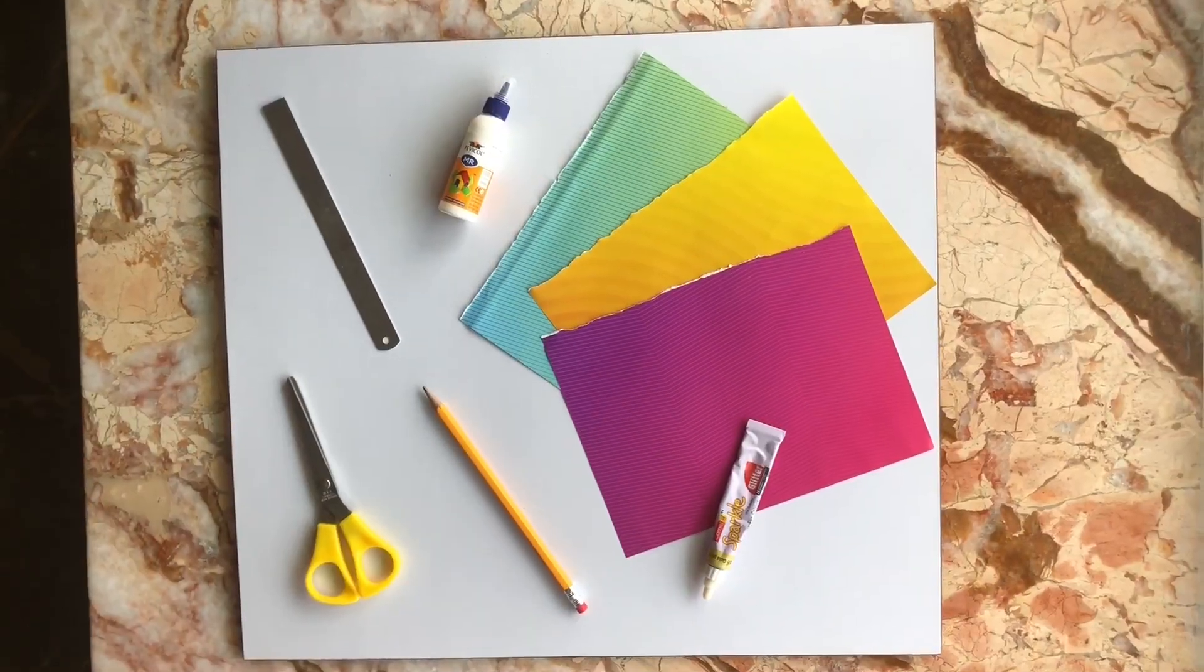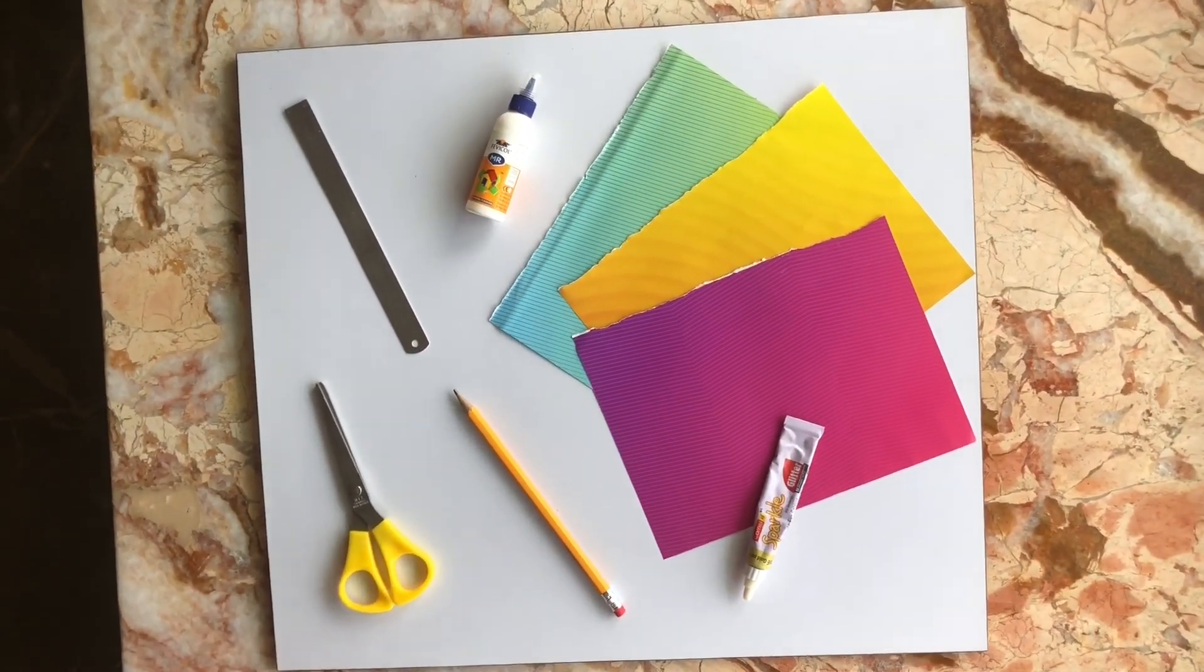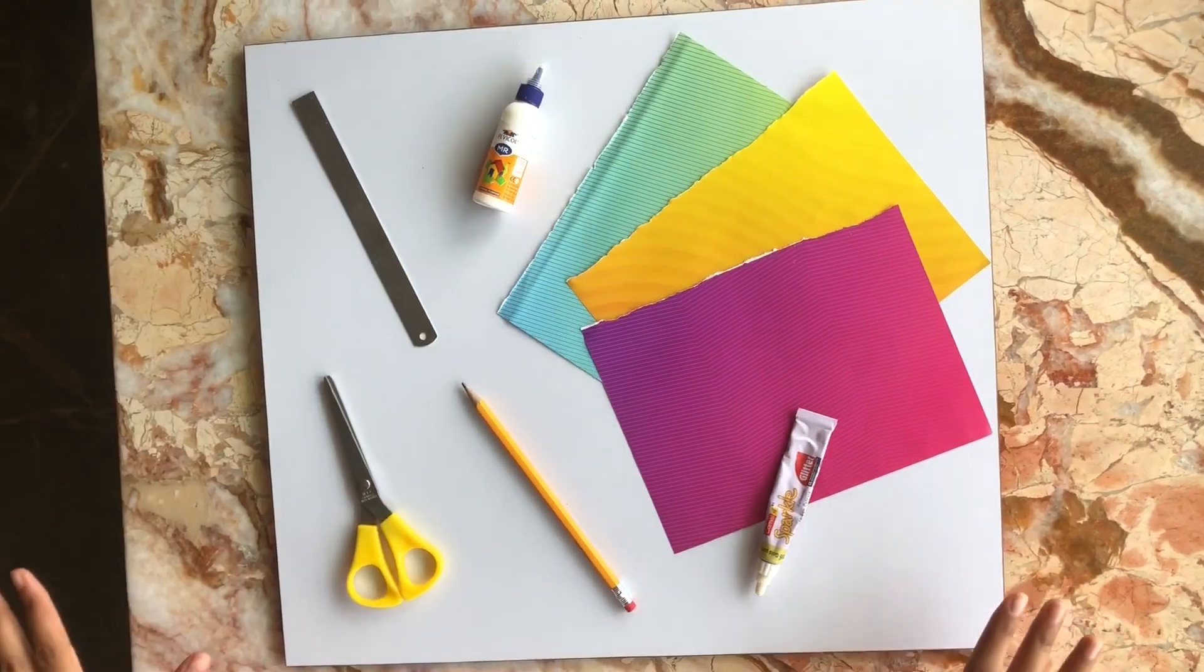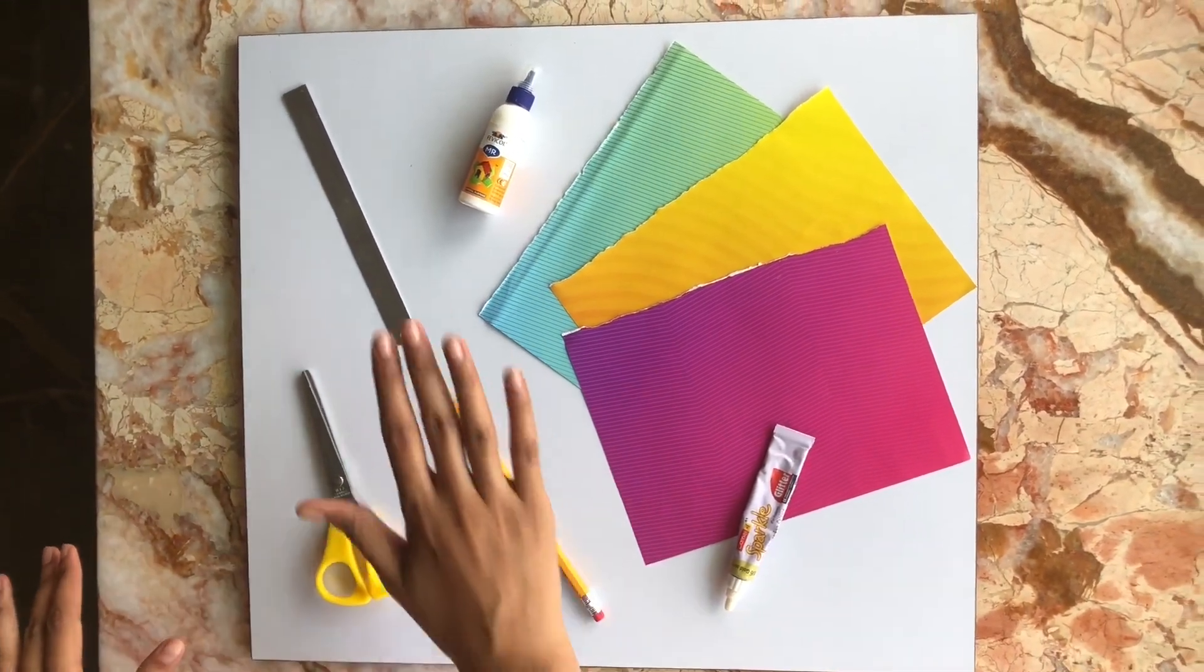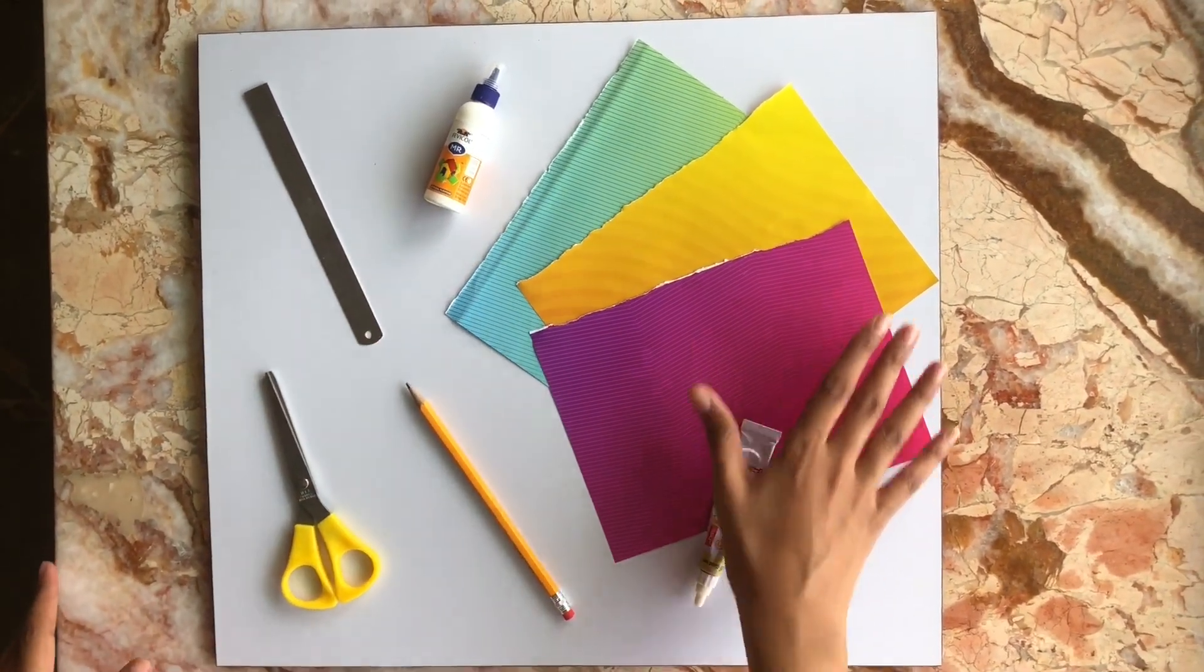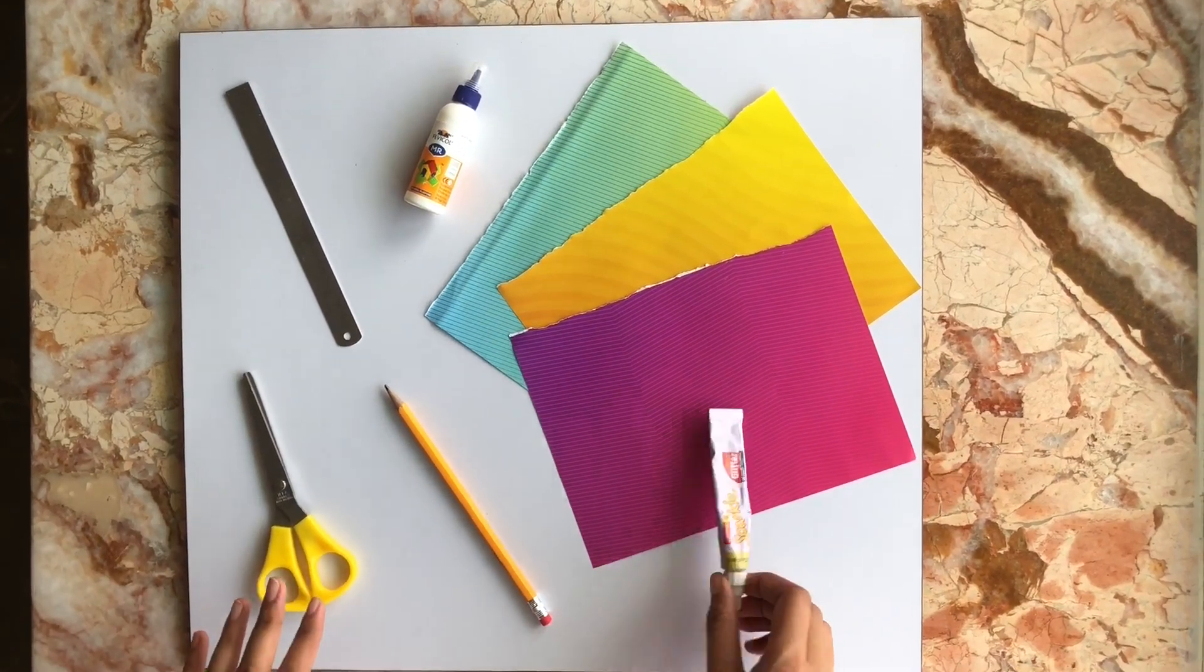Hi everyone, today we're going to make a paper rose or paper flower. For this activity you need very basic home supplies: scissors, pencil, scale, glue, some rough paper that I got out of a magazine, and if you have some sparkles it will be great.